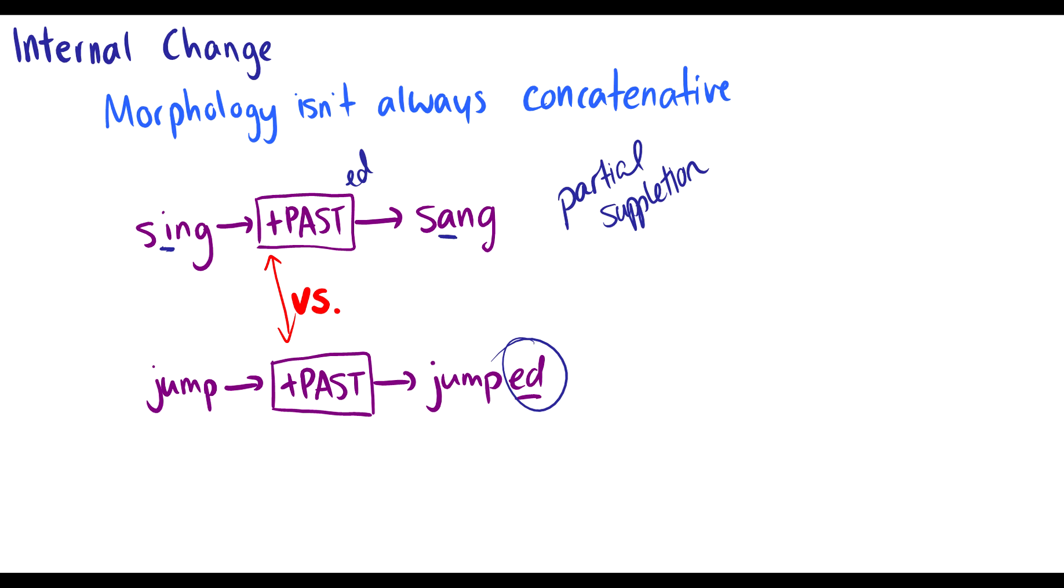And English is very messy. So there's two different ways that we can show past tense in English. And a lot of our morphemes work like this. Think of the word for plural. We have kids, parents, and then we don't say childs, we say children. What's up with that? Who knows? It's like the only plural morpheme in English that isn't an -s. So that's another case, but we won't get into that. So that's internal change.